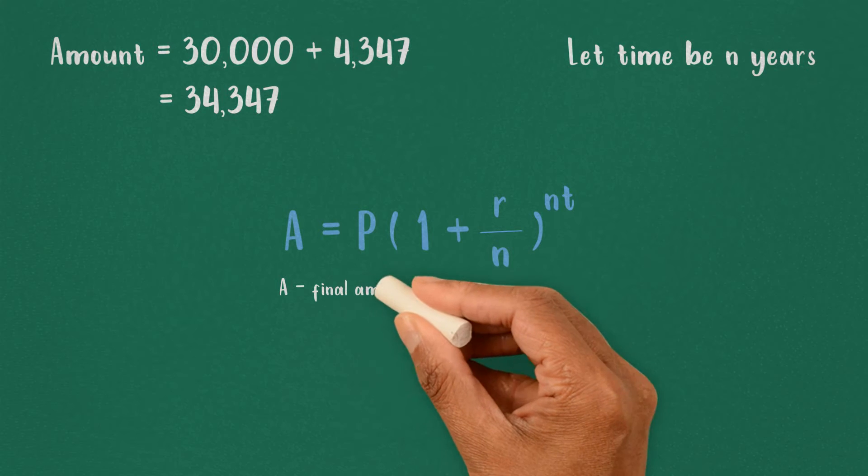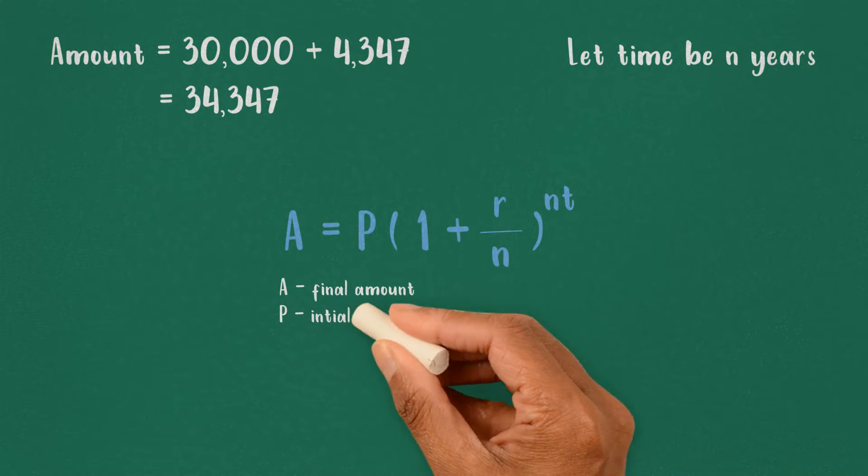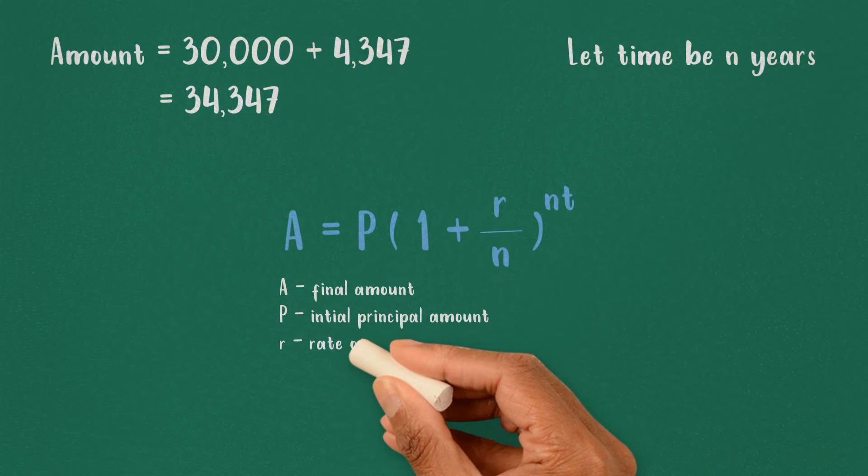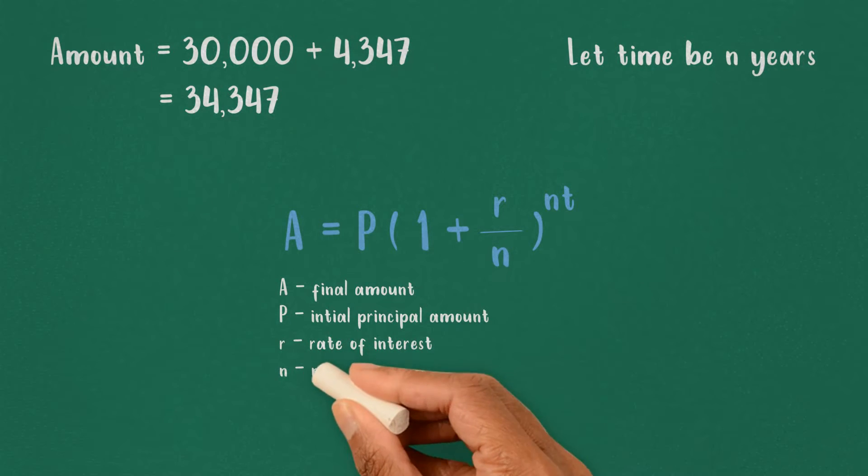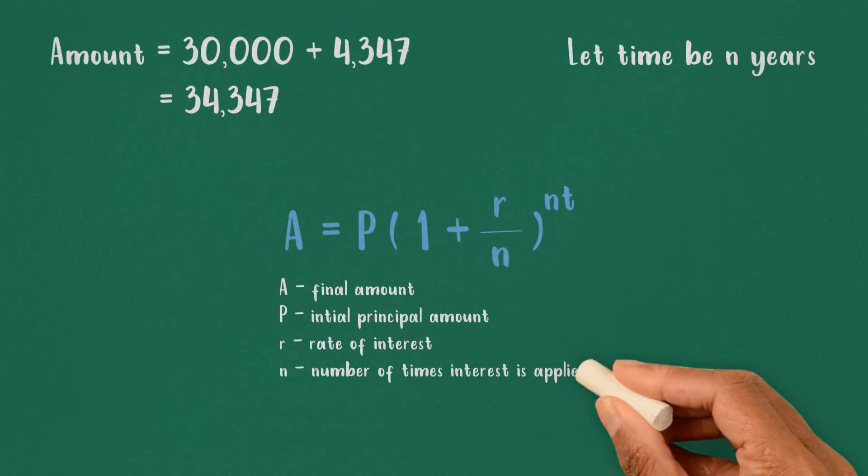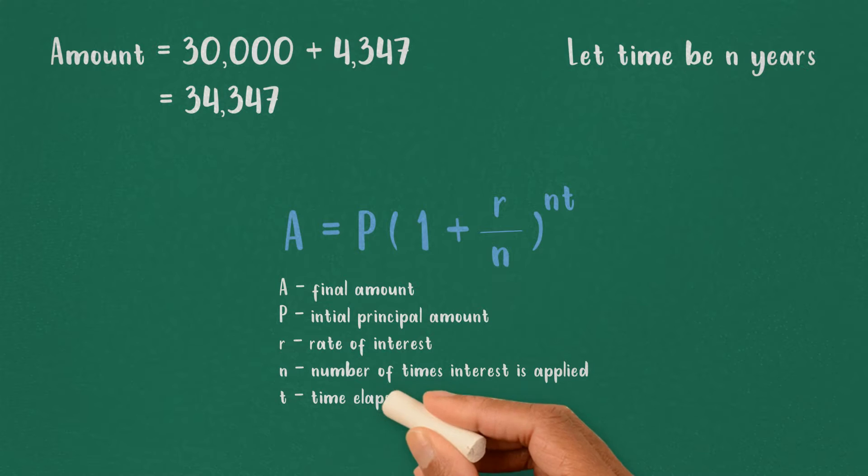where A is final amount, P is principal amount, R is rate of interest, N is number of times interest is applied, and T is time elapsed.